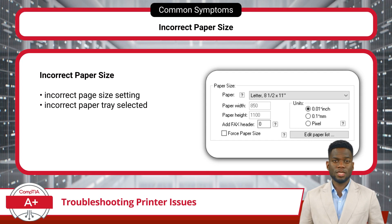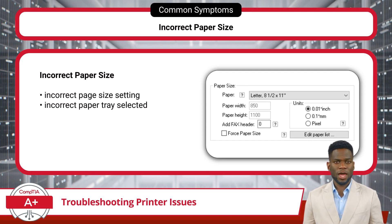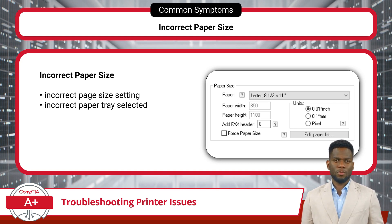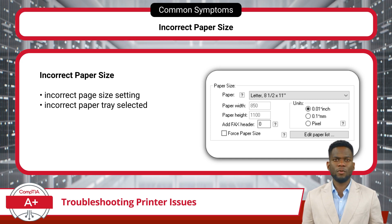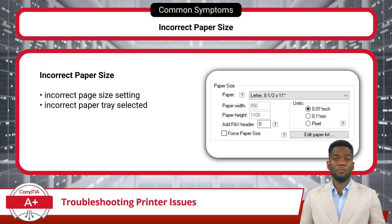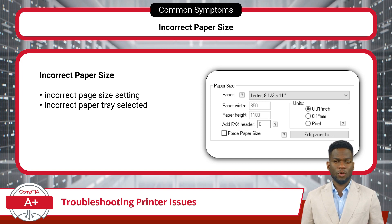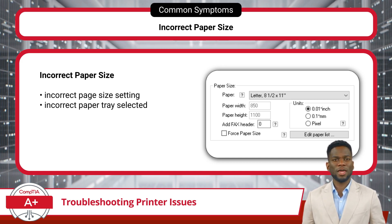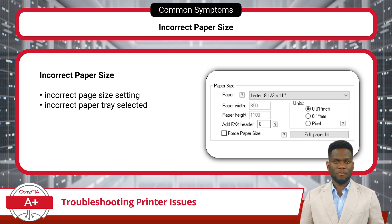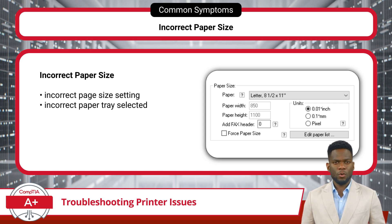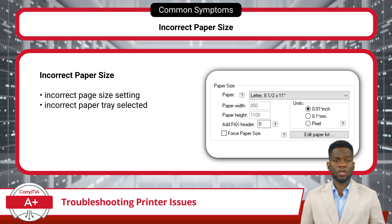Printing on the incorrect paper size — such as using letter-sized paper when the document is formatted for legal-sized paper — can lead to various issues. A common problem is that the printer may cut off the bottom of the print job, since legal-sized paper is longer than letter-sized. Verify the print settings to ensure the correct paper size is selected and adjust settings accordingly. When using a multi-tray print setup, ensure that the printing trays are correctly set.